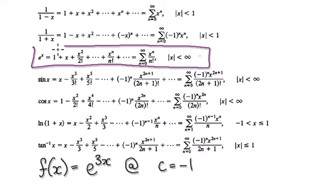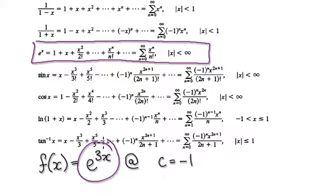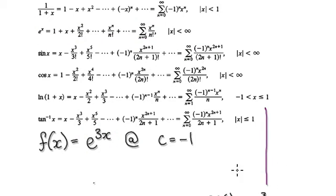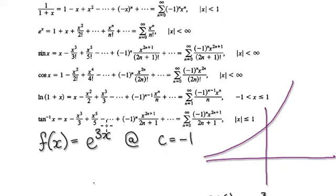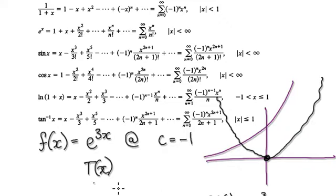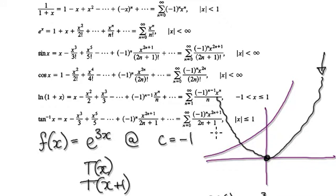To do this we are going to make use of this. So e to the power of 3x will look something like this. We would start out with our general power series, then apply this transformation, because we want to evaluate it at negative 1. So this graph here will then become this — when you apply this transformation, everything gets shifted across by 1, so now this is at negative 1.